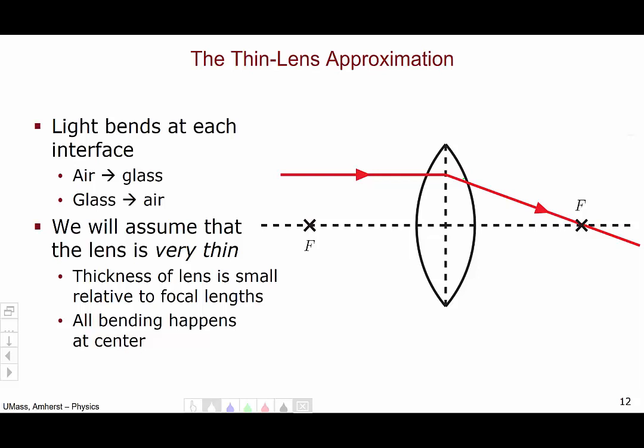We, however, will assume that the lens is very, very thin. In particular, what do we mean by thin? We mean that the thickness of the lens is very small relative to the focal length.